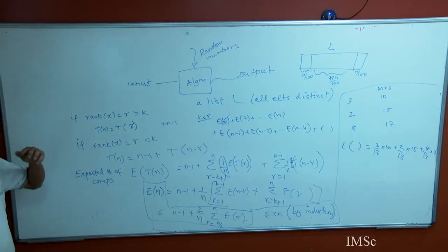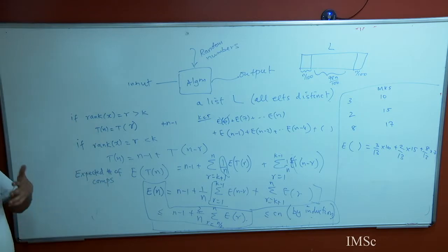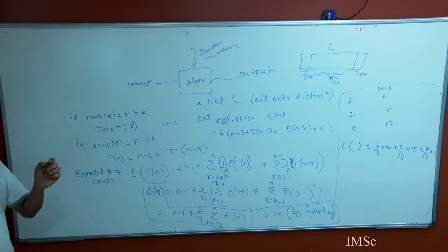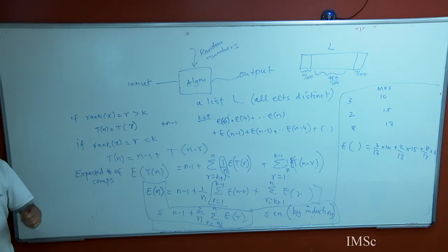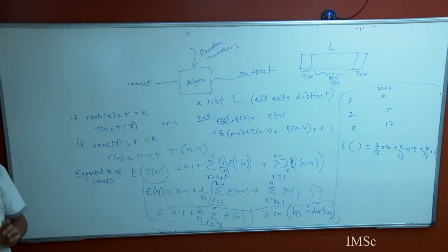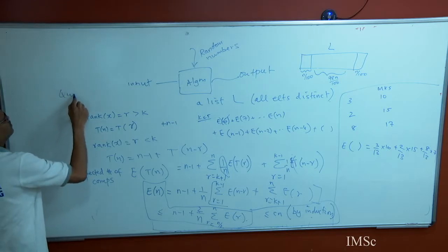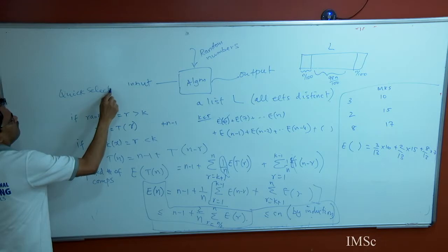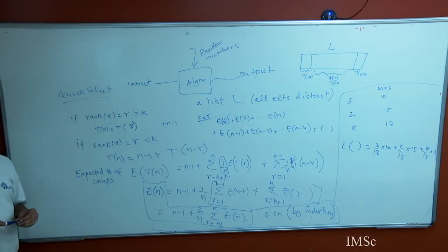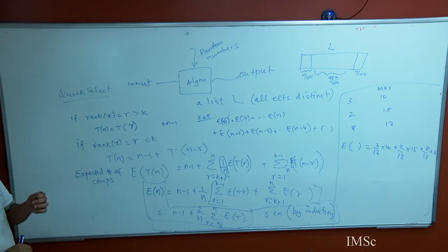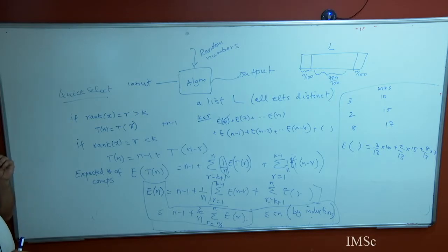This is a very simple median finding algorithm. As I said, this is the one which was discovered initially, and then people went on to see how to ensure that the pivot x really throws away a fraction of the elements — which gave rise to the complex worst-case linear median finding algorithm. This randomized version is called quick select.